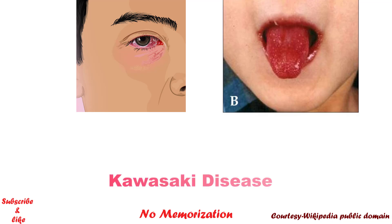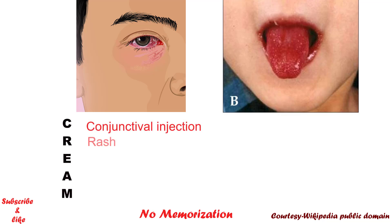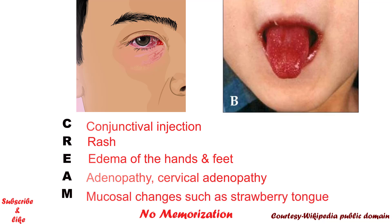Yes — Kawasaki disease. It is a medium vessel vasculitis with a predilection for coronary arteries. Here the polymorphous rash will be associated with some other special features. The easiest mnemonic is CREAM: C for conjunctival injection, R for rash, E for edema of the hands and feet, A for adenopathy — particularly cervical adenopathy — and M for mucosal changes such as strawberry tongue.